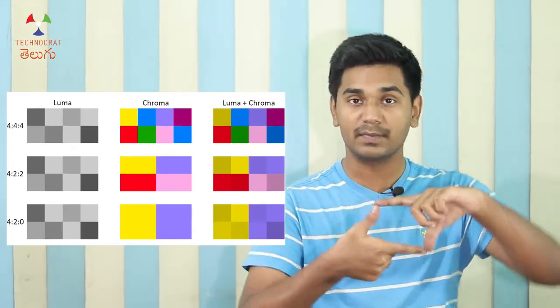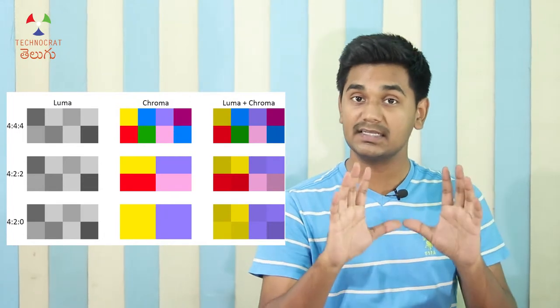Then we have the technique of chroma subsampling. We have pixels in the image arranged in 4x4 blocks or 16x16 blocks. We scan that image point by point, looking at 16 pixels or 4 pixels at a time. Then we approximate the colors, and we can eliminate duplicate or extra color data. The most relevant image data is compressed.